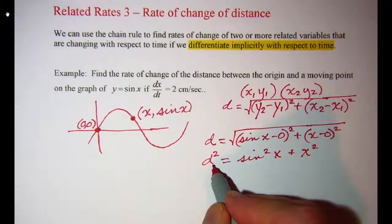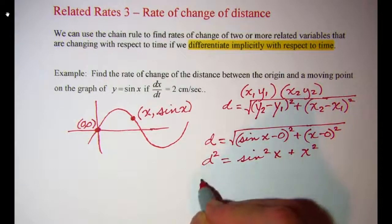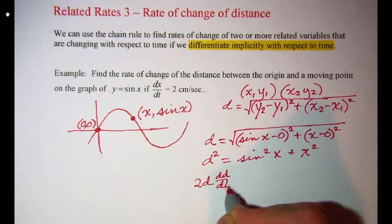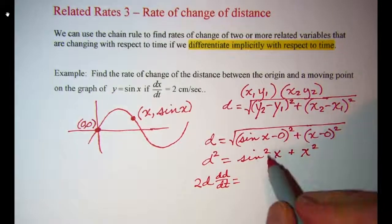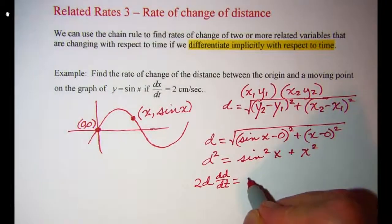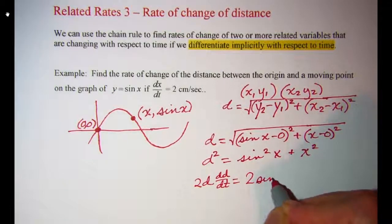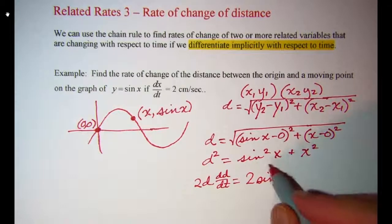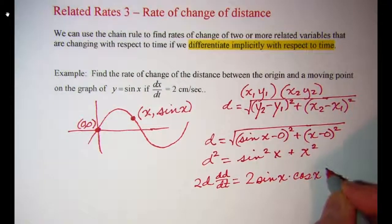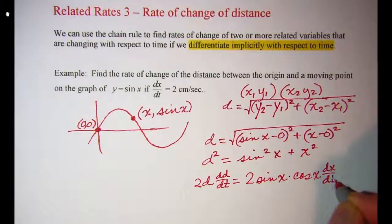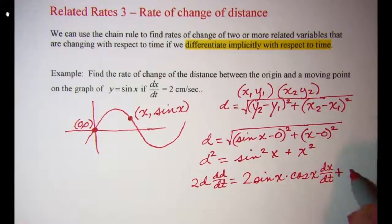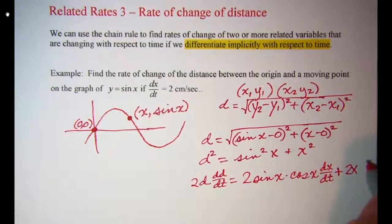The derivative on the left side is 2d · dd/dt. The derivative of the first term is going to be 2 sine x times the derivative of sine x, which is cosine x, and then times dx/dt. And the derivative of the second term is just 2x · dx/dt.